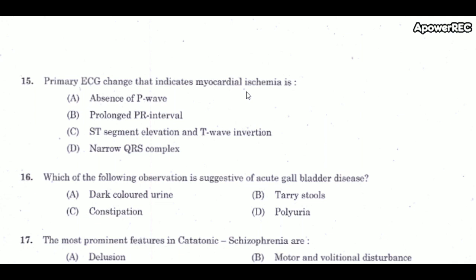Next question: primary ECG changes that indicate myocardial ischemia are ST segment elevation and T wave inversion. Myocardial ischemia is caused by decreased blood flow in a coronary artery due to atherosclerosis or occlusion of the artery by an embolus or thrombus.